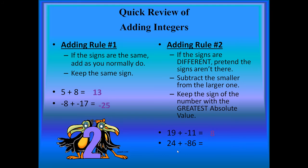Try it again. I have positive 24 plus negative 86. The signs are different, so we're going to subtract the smaller from the larger. So that means 86 take away 24 and then what's the sign going to be? Keep the sign of the number with the greatest absolute value. Would that be the 24 and keep it positive or is it going to be negative like the 86? Of course, negative. So it's negative 62. So that's your review of adding.